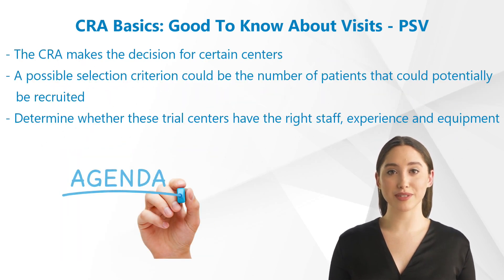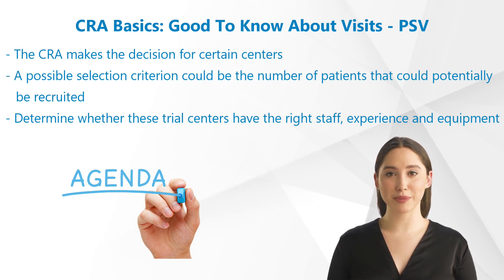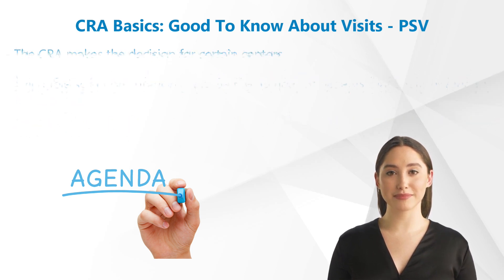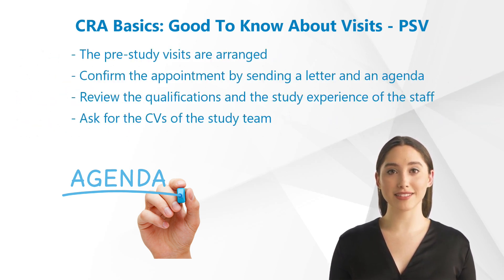From the sum of the possible centers, you now make the decision for certain centers. A possible selection criterion could be the number of patients that could potentially be recruited. However, you can also use the documents to determine whether these trial centers have the right staff, experience, and equipment. Once the decision has been made to select specific trial sites, the pre-study visits are arranged.